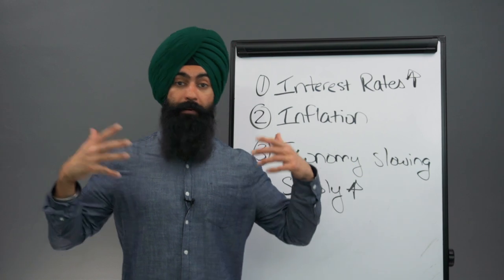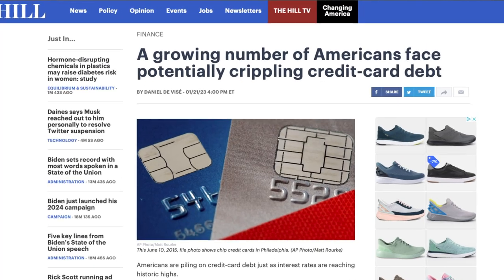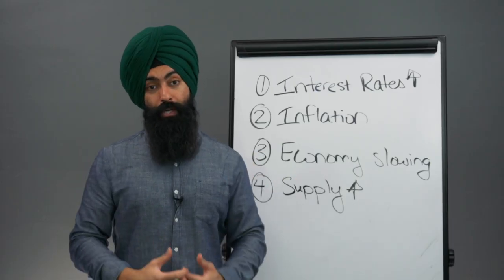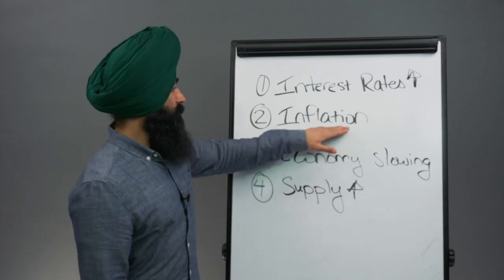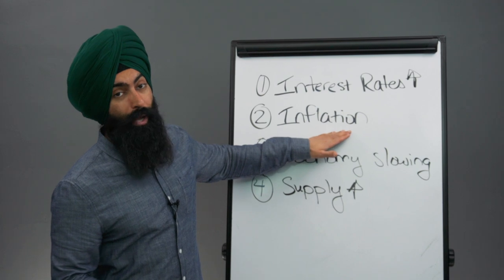A couple of years ago, people had big bank accounts. People saw their credit card debt dwindling. Now, we're seeing credit card debt rising, and we're seeing savings accounts falling, so people have less ability to go out and buy cars just because they don't have the same wealth that they did before because inflation is eating away at people's wealth.